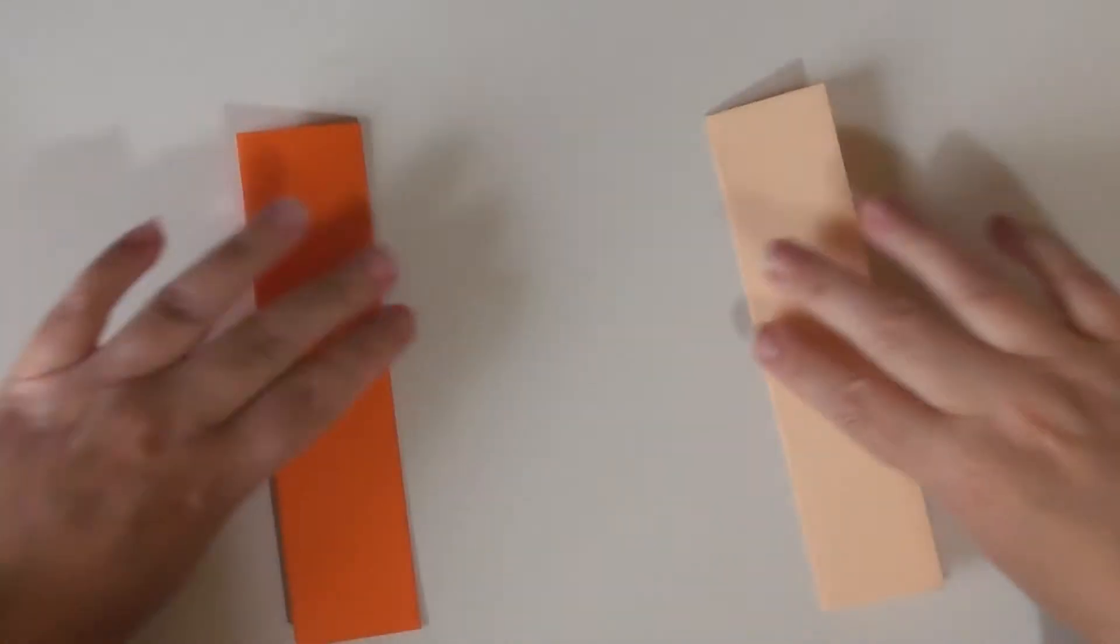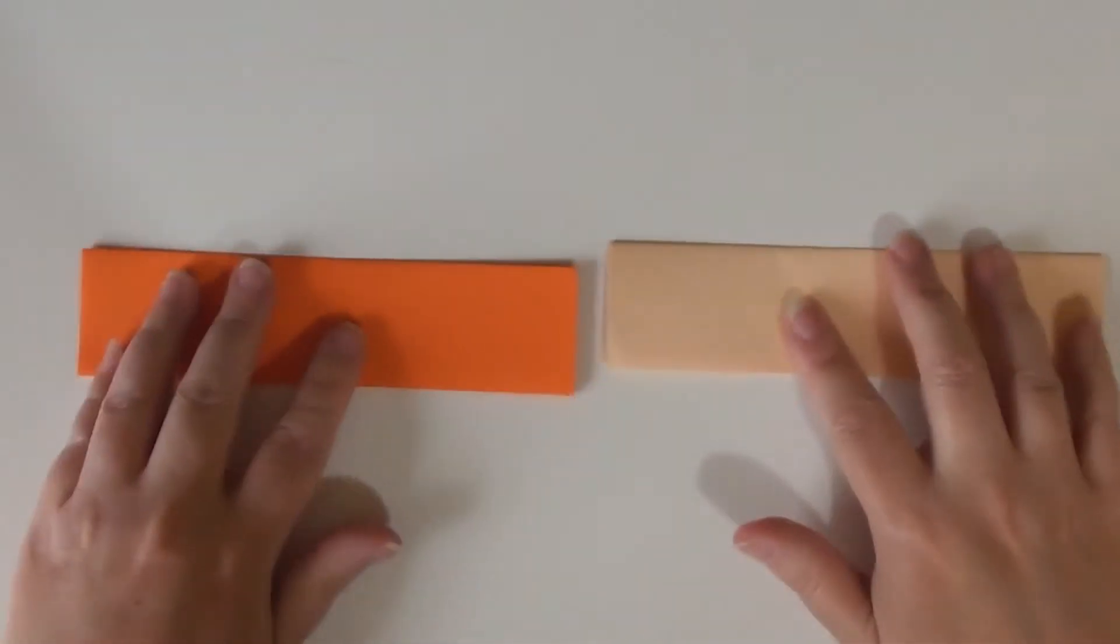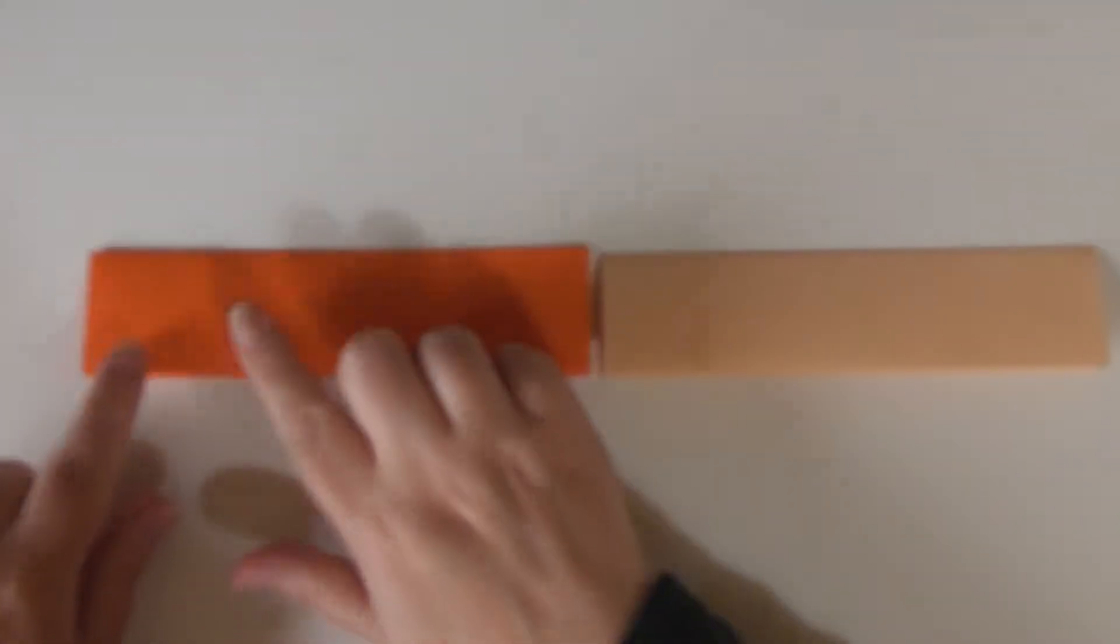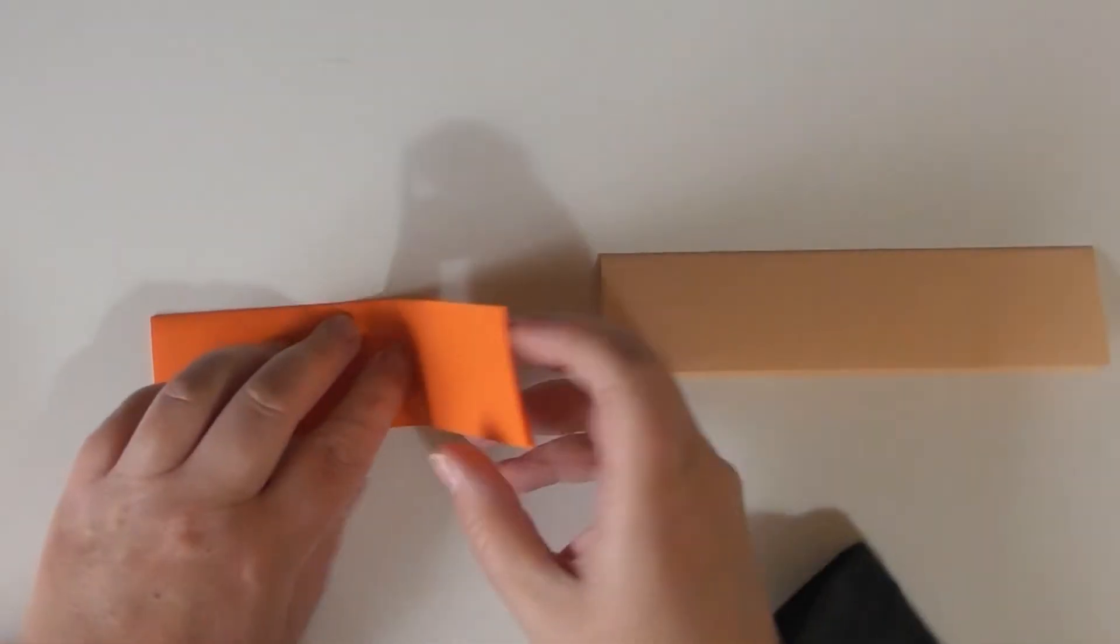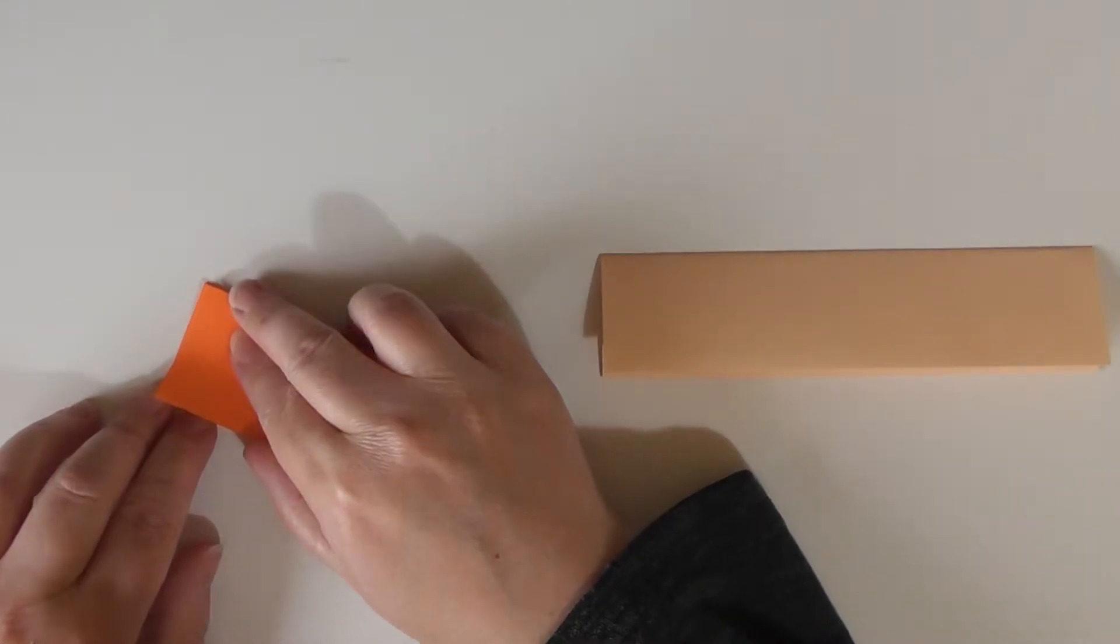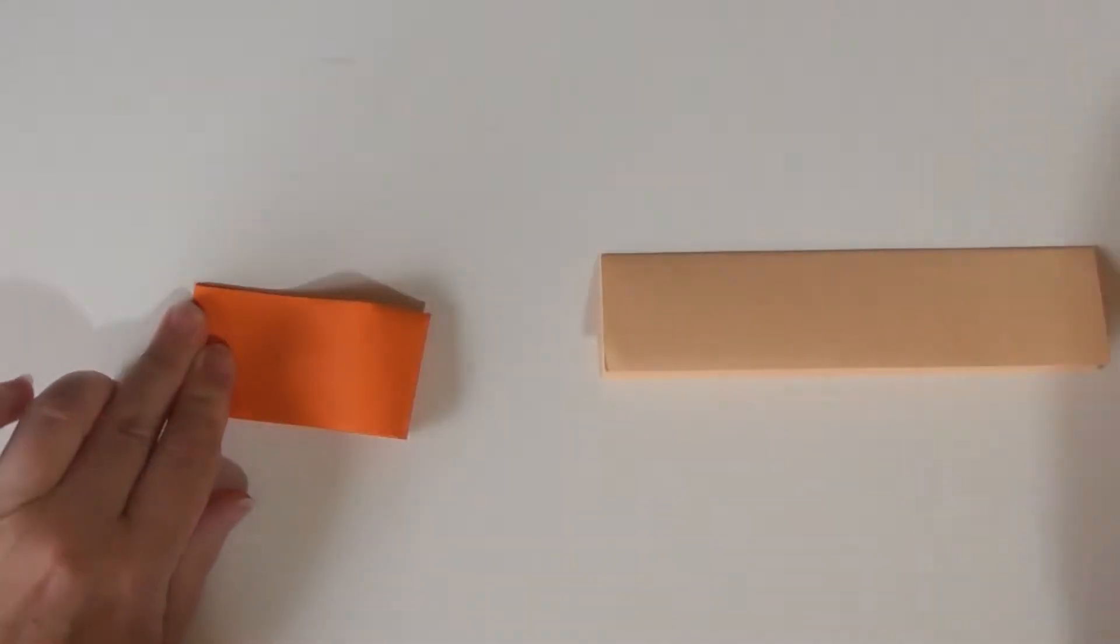So now we've got these. Turn them around so you've got the flaps down on the bottom. Now is when we start doing the mirror images. So, first thing we're going to do is fold in half. And this first point is identical for both.